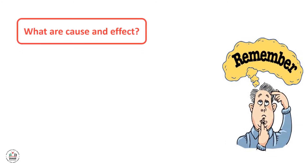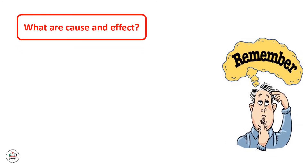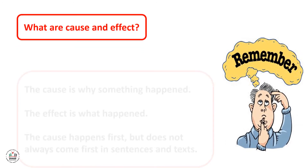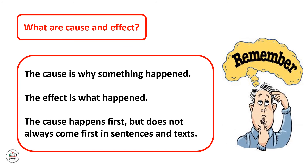Now let's remember together what cause and effect are. The cause is why something happened, while the effect is what happened. The cause happens first, but does not always come first in sentences and texts.